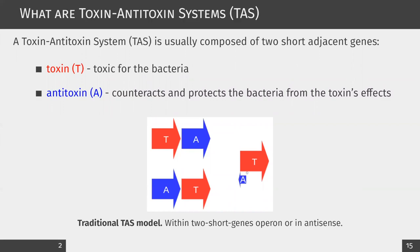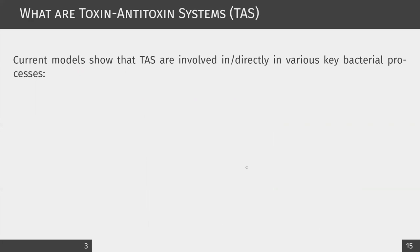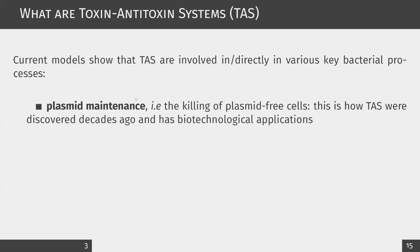In some specific TAS systems, the antitoxin can be in antisense orientation relative to the toxin. TAS are described as key players in various bacterial processes like plasmid maintenance. This is a mechanism where daughter cells which do not have the plasmid bearing the antitoxin will die due to the toxin effects.